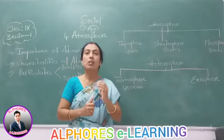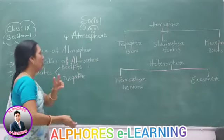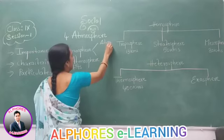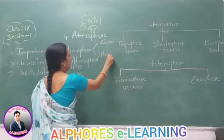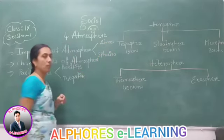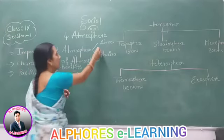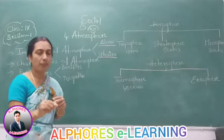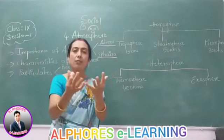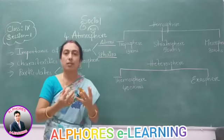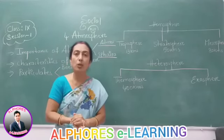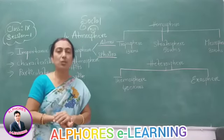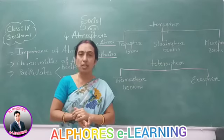Atmosphere. The word atmosphere is derived from two Greek words: atmos and spera. Atmos means vapor, spera means sphere or ball. That means atmosphere means a layer of gases. In this session I am going to explain the importance of atmosphere, characteristic features of atmosphere, and the composition of atmosphere.